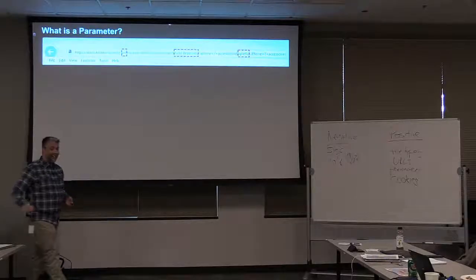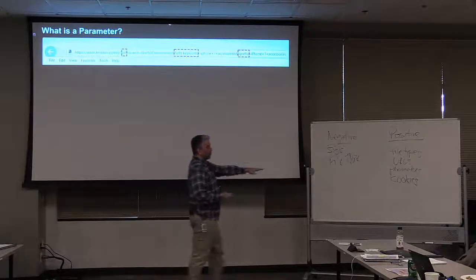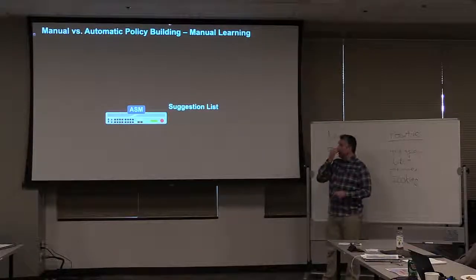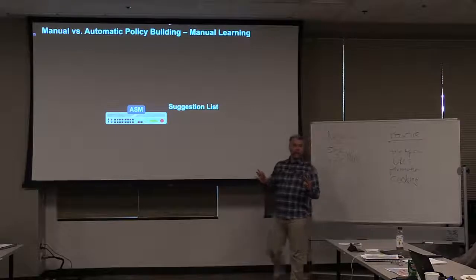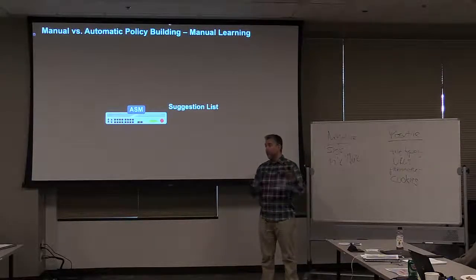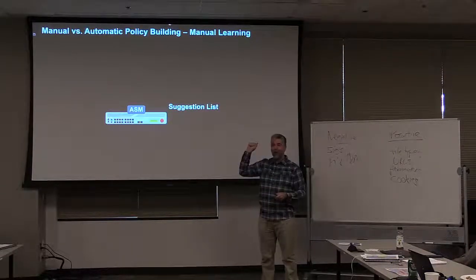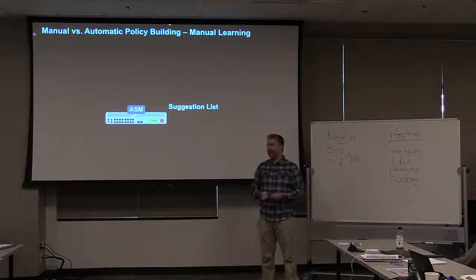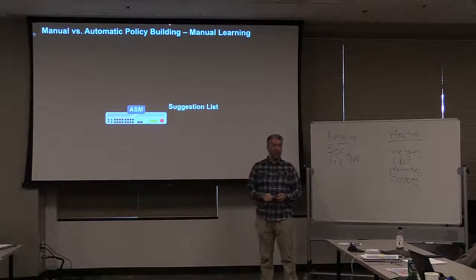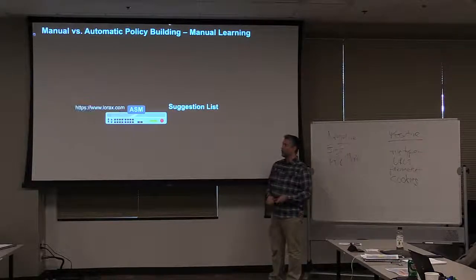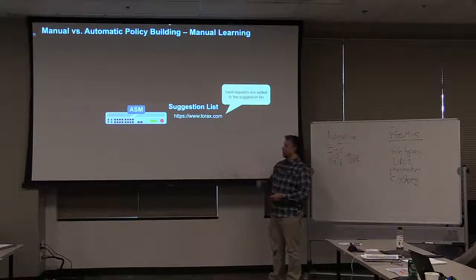We're going to talk about adding the parameter whitelist — the allowed parameters page. The first of our three categories is manual versus automatic learning. Let's talk about manual learning first. This should sound familiar because it's what you just did in your last exercise. We have requests coming in from users — in this case, URLs — being added to the suggestion list on the traffic learning page.